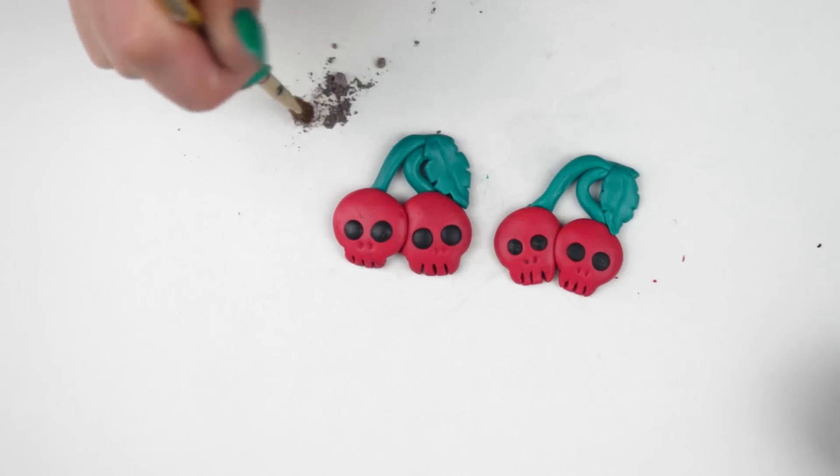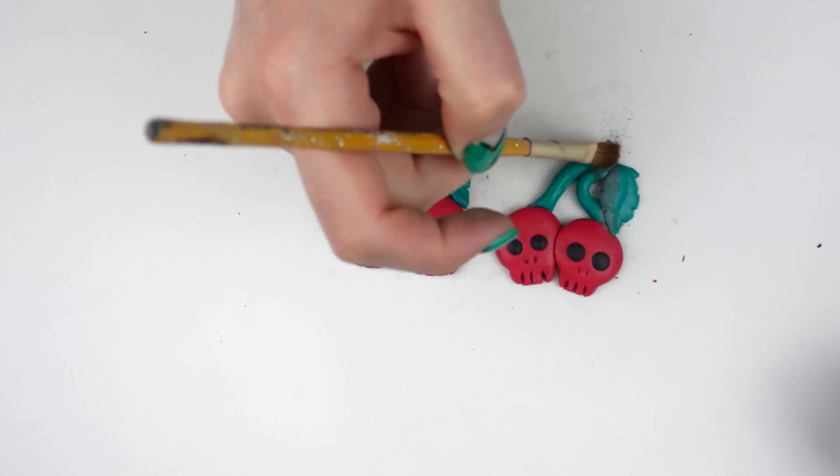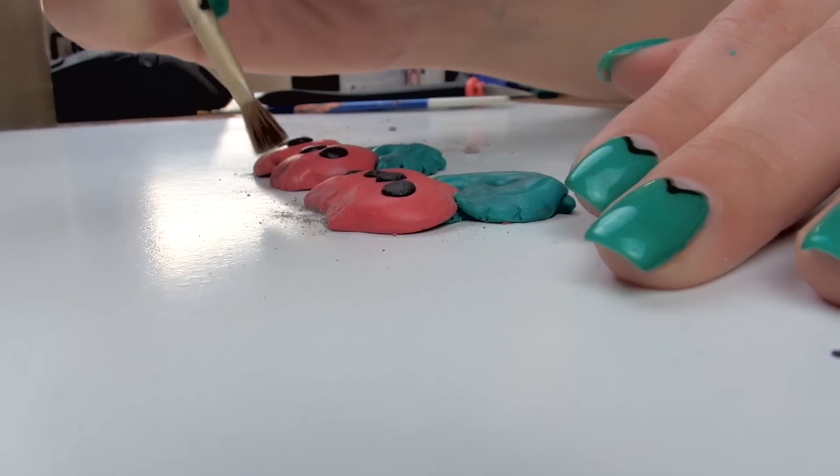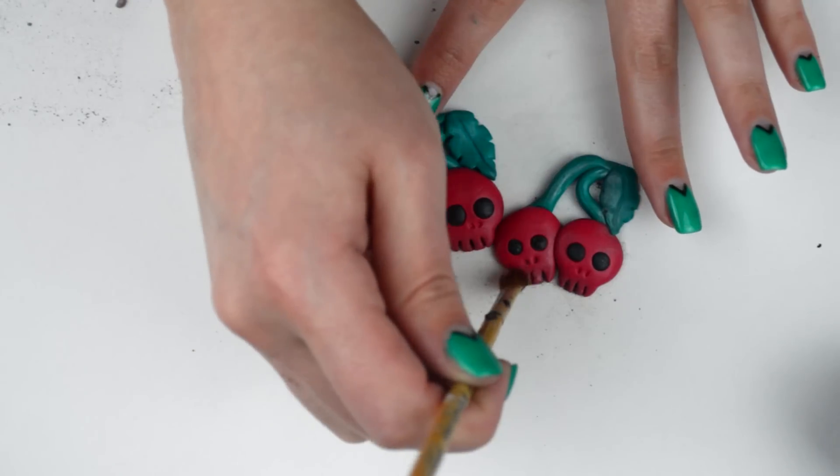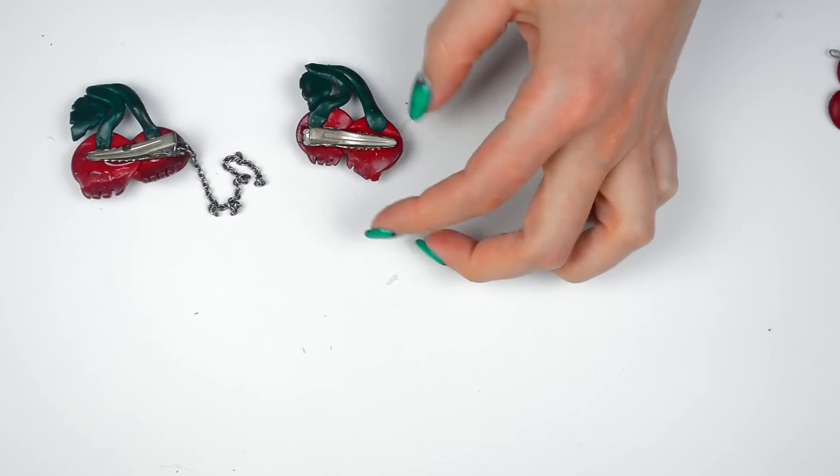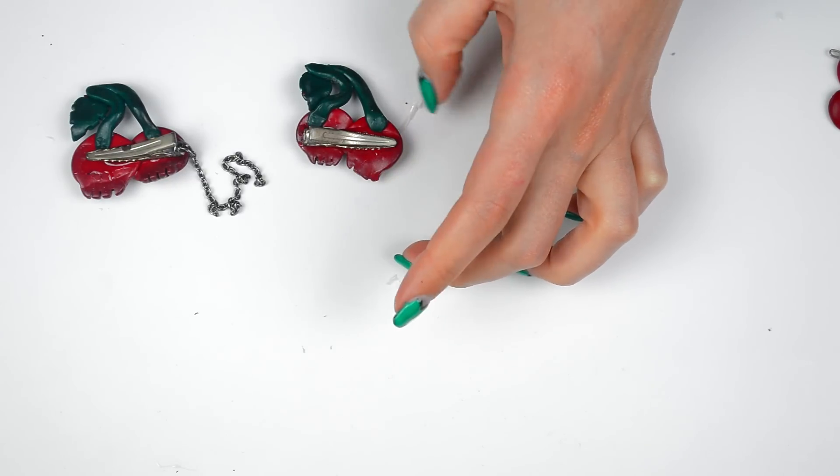Before you bake it, you can add depth to certain areas using soft pastels, wherever you feel like there would be shadows. It just makes it a bit more realistic. After baking, the colors may appear darker, especially if you leave them a little too long in the oven, like I did.